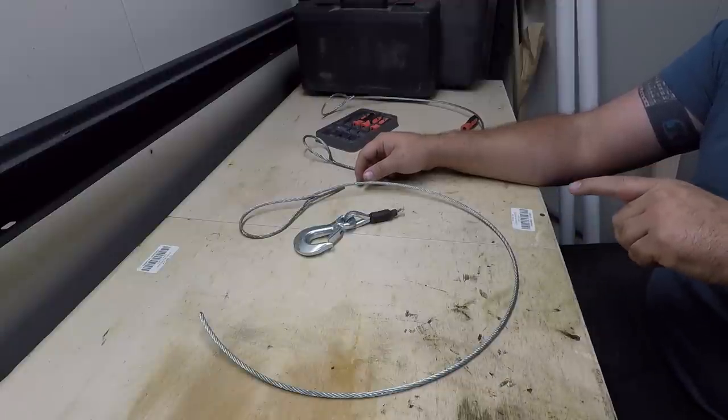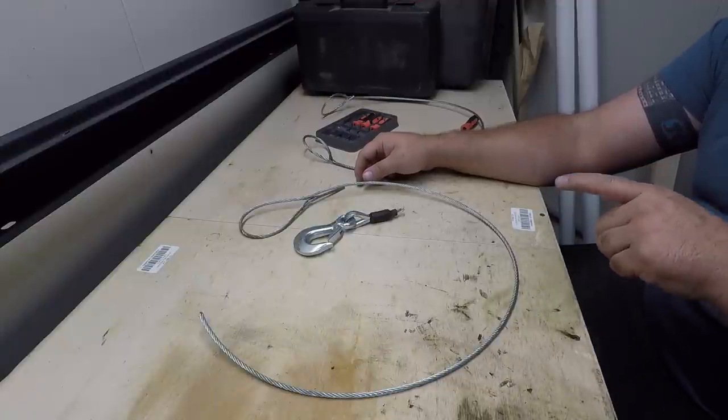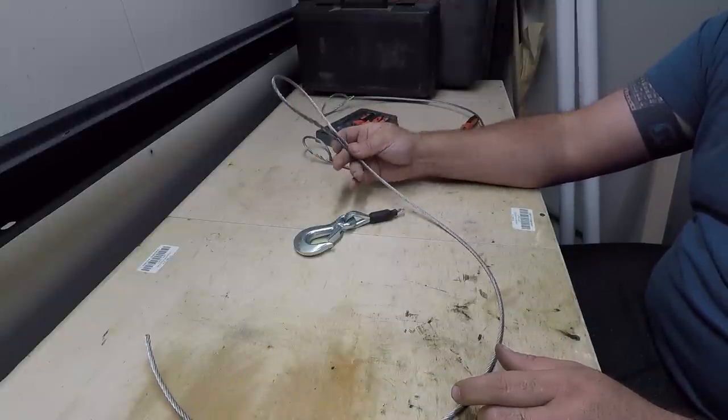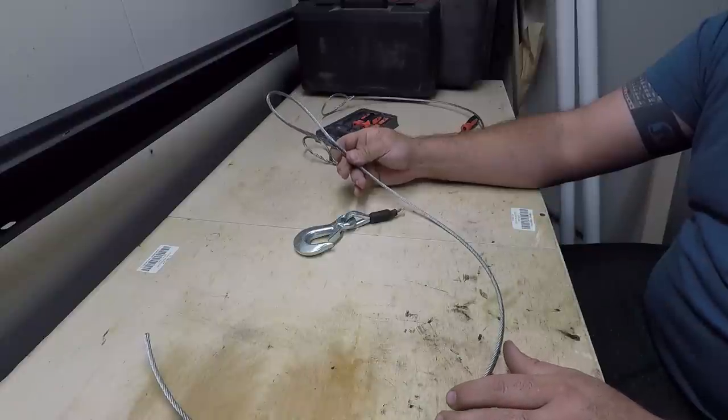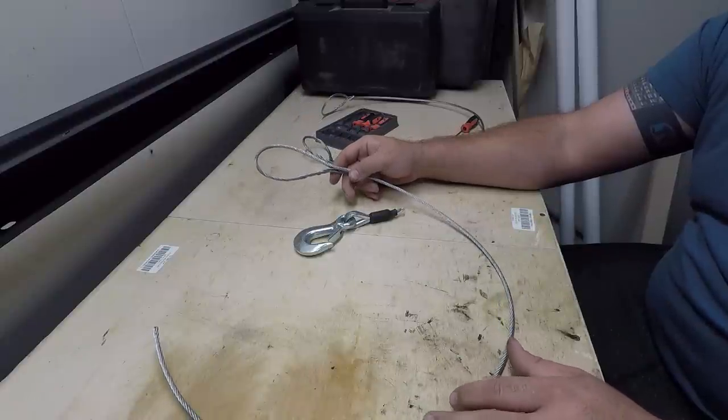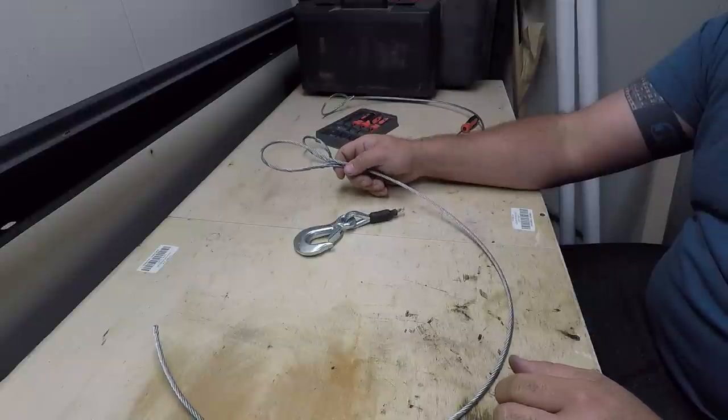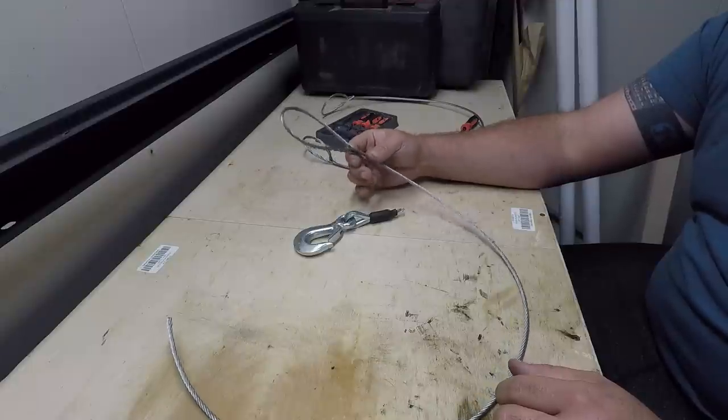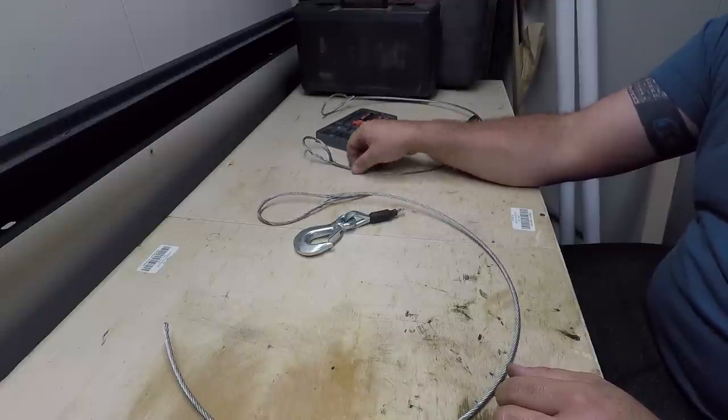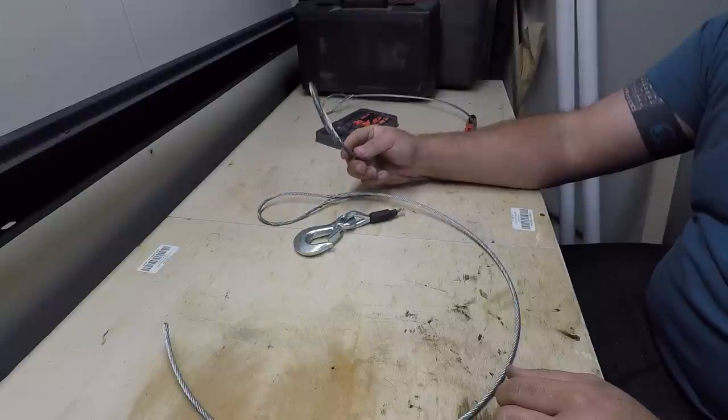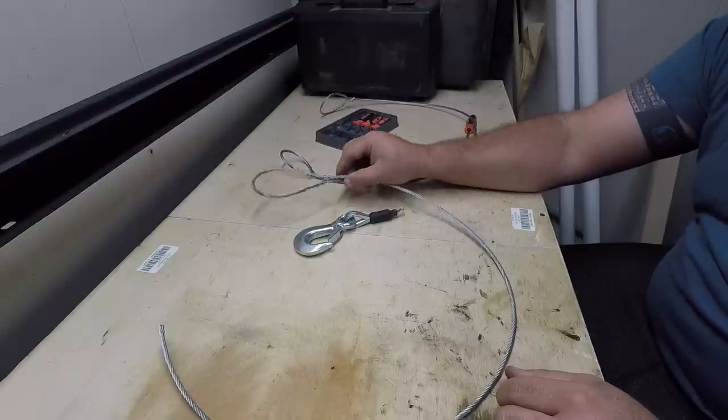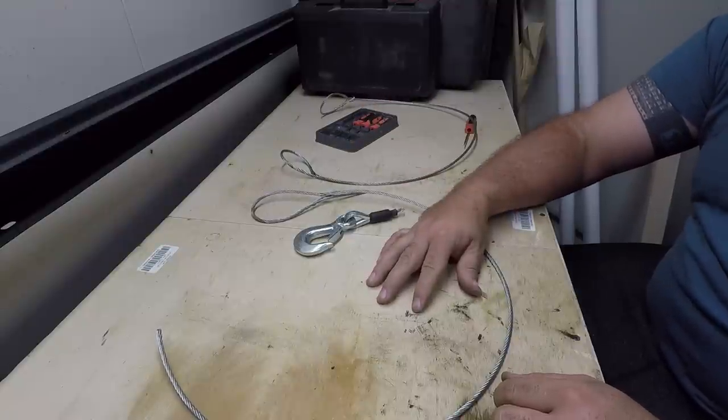Do not use these for lifting. Don't hoist things with these. When they build a choker, they swedge a collar on it and then they proof test it afterwards. They've got a big apparatus, they put the choker in, they put X amount of force on it depending on the size of the choker, and they proof test it. These aren't proof tested. So do not lift with these. But you can use these on your skidder cables, you can use it on your winch cables for recovery winches. Not hoisting winches, but recovery winches.